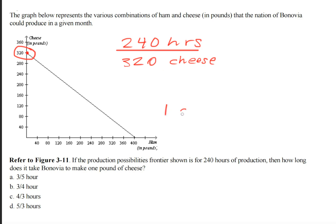For every one pound of cheese, since we divide it by 320, all we have to do is 240 divided by 320, and that will give us 0.75 hours.